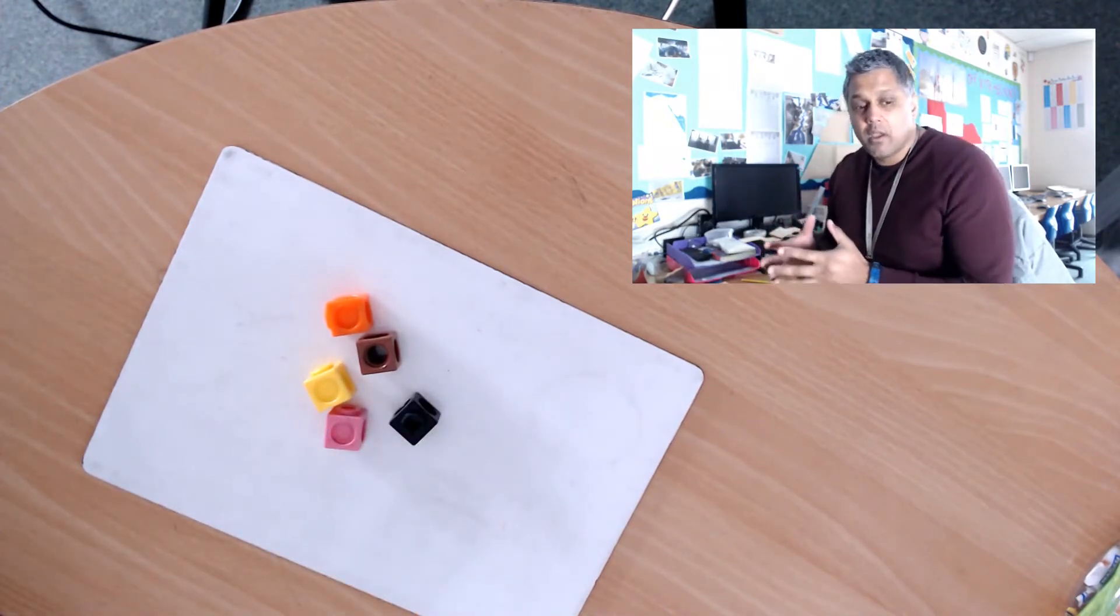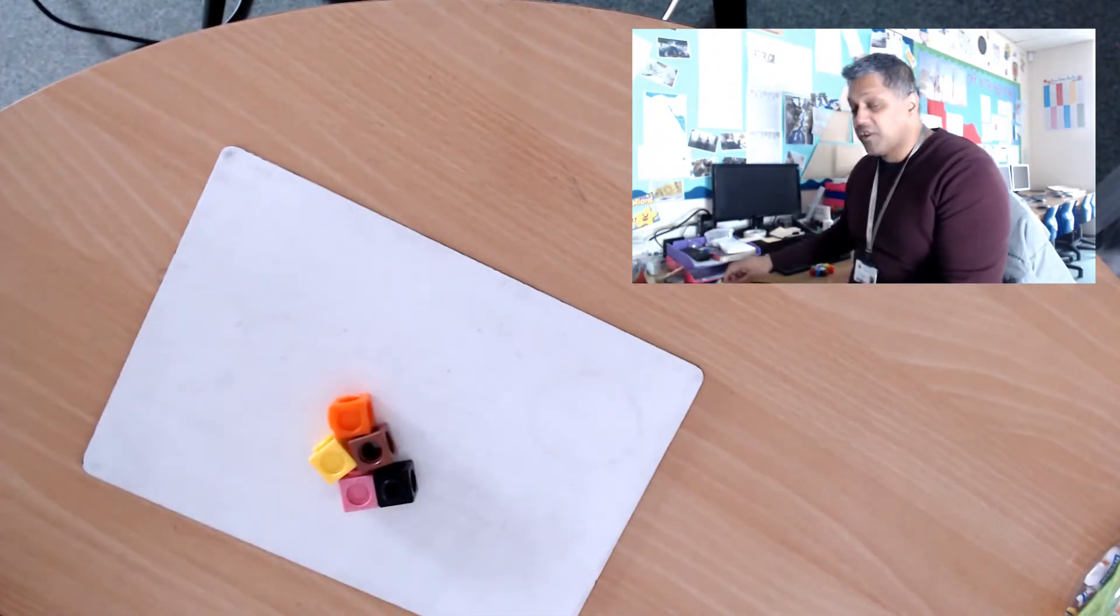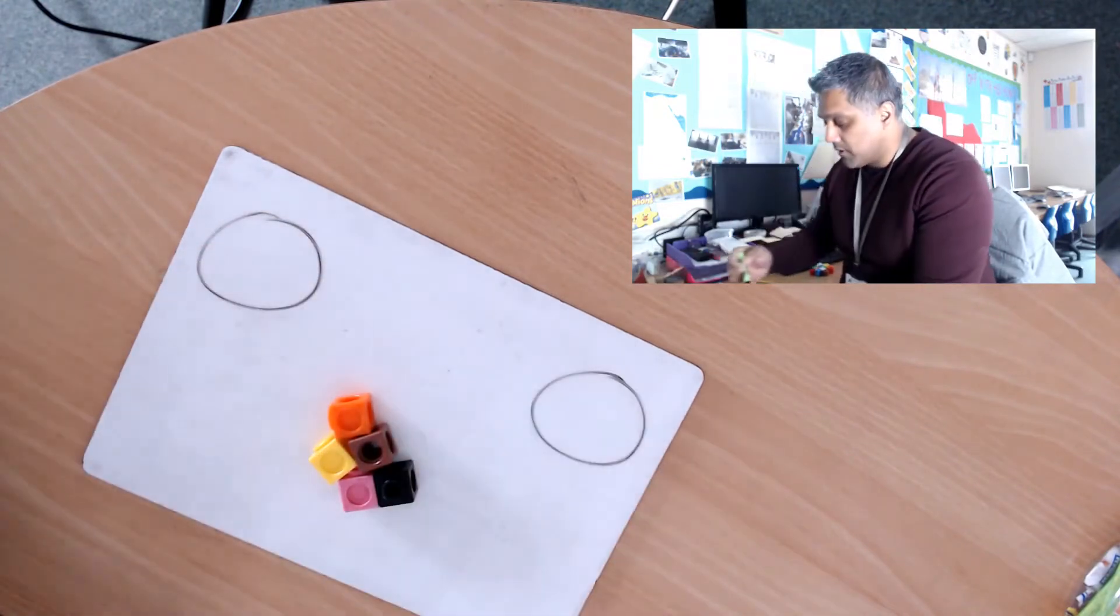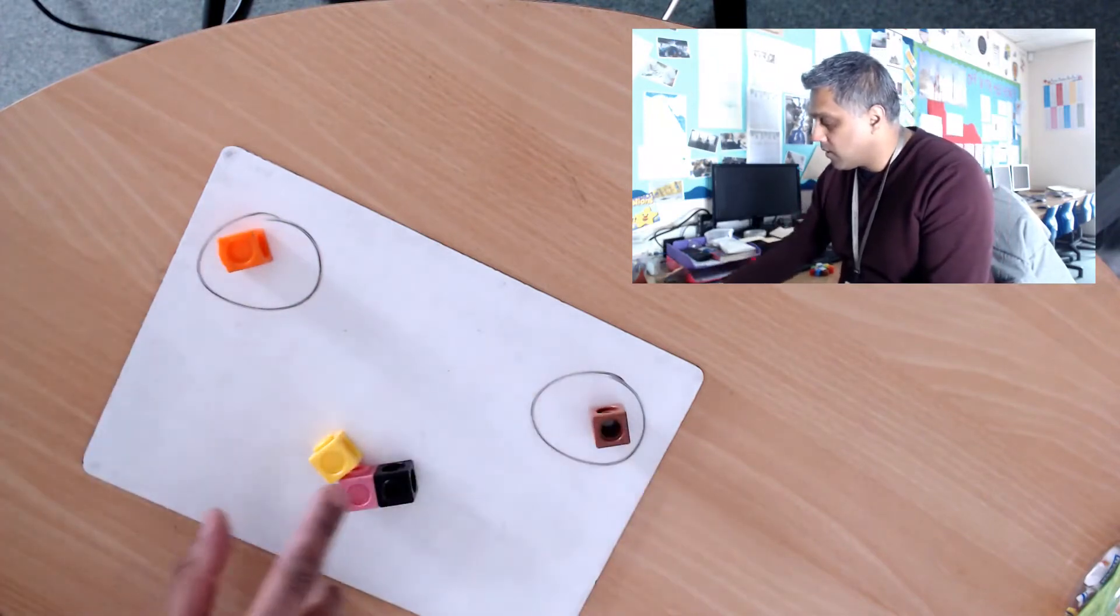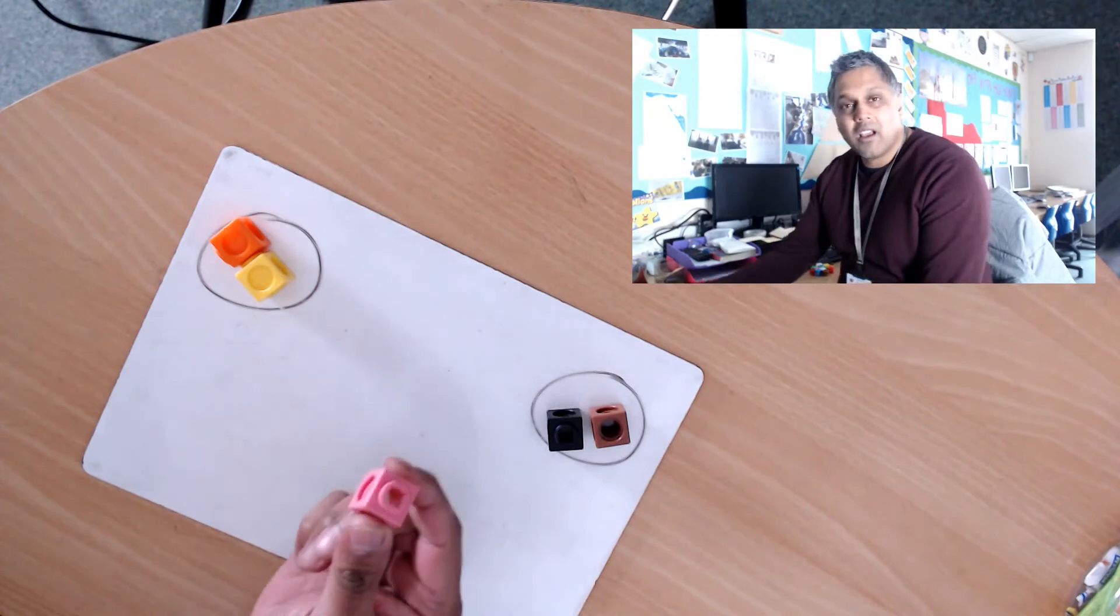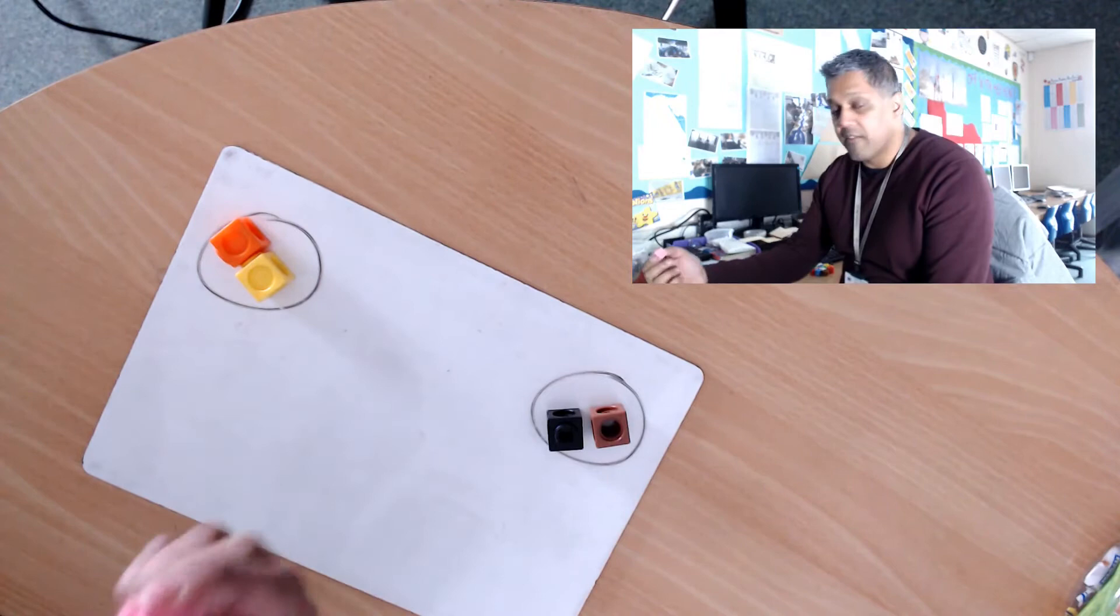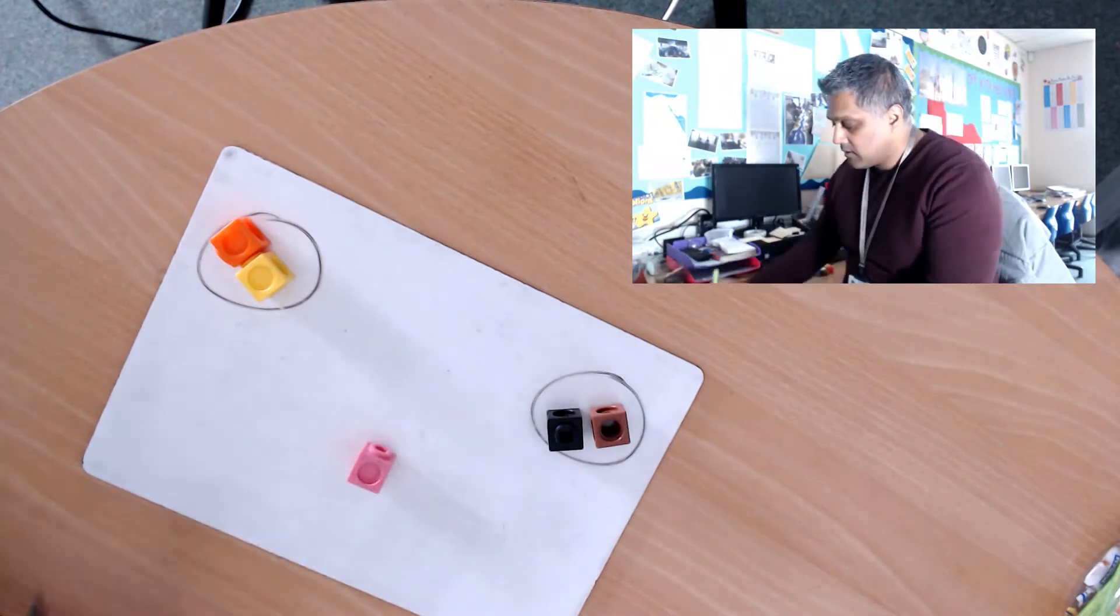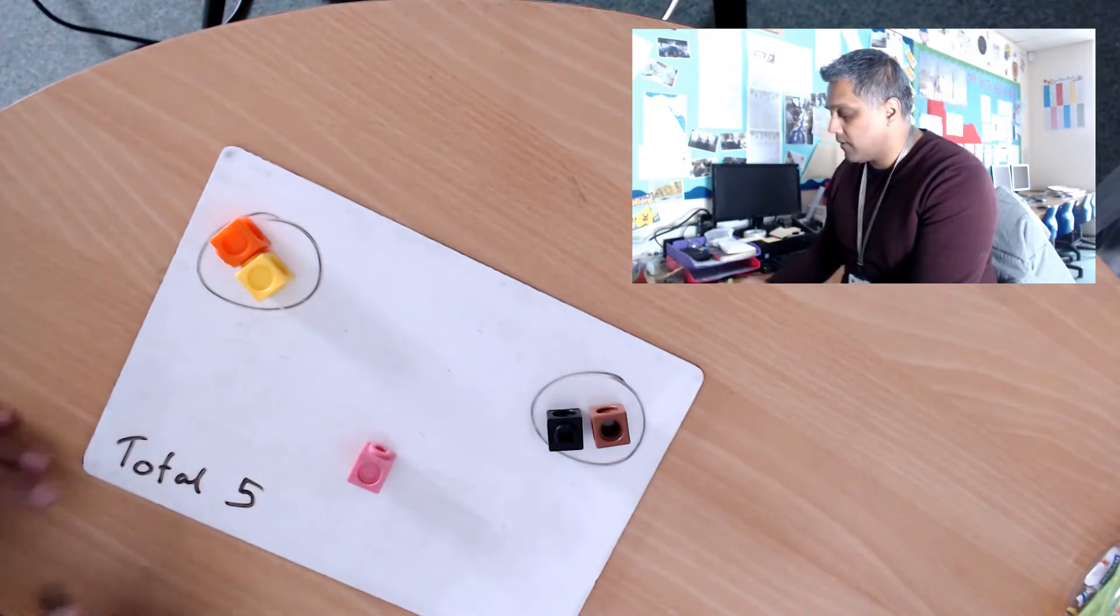Again, we're gonna try and share them between two groups, so you can share them between someone at home or just put them to one side. So one for me, one for you, one for me, one for you, one for me, one for you. Hmm, I can't share that equally. It's one whole cube there. Can I cut it in half? I can't share it, so this is an odd number.